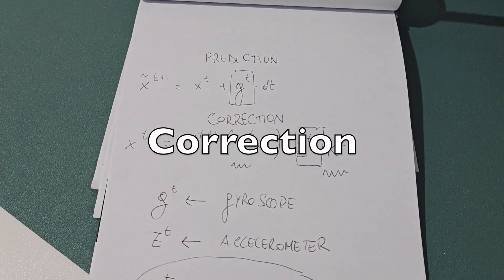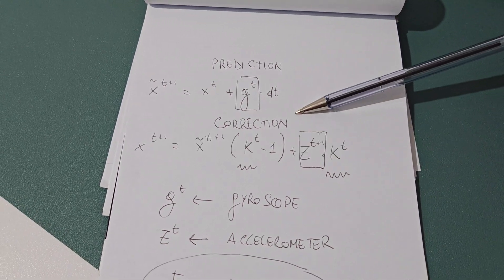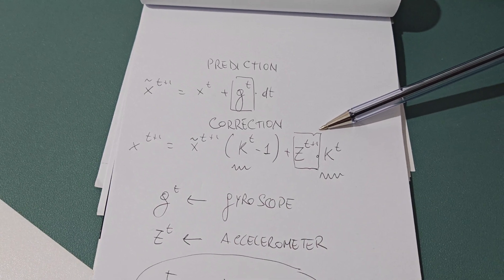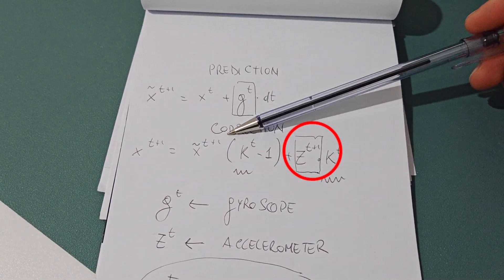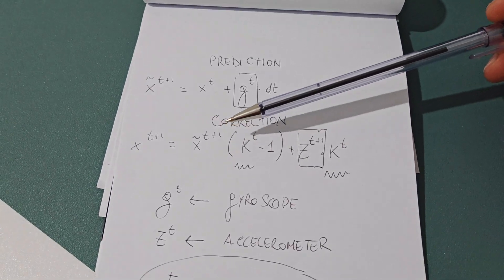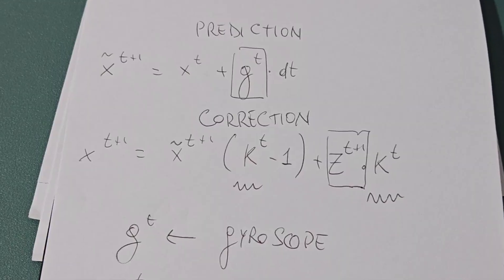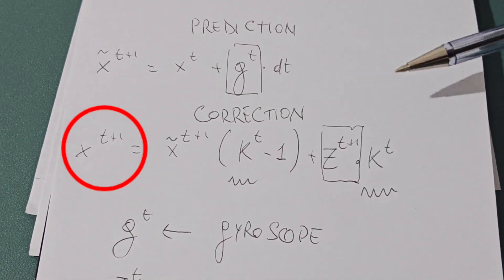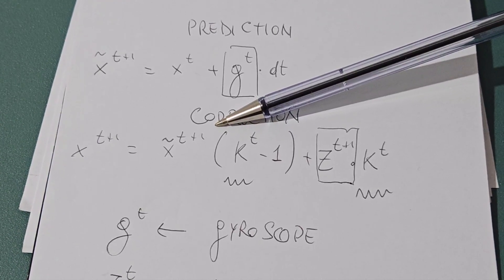In the correction step, we refine our estimate by comparing the predicted state with the new measurement. In extreme cases, if the Kalman gain is 1, the estimate fully relies on the accelerometer. If it is 0, it depends entirely on the gyroscope. In general, the final estimate is an optimal combination of both, weighted by their respective uncertainties.